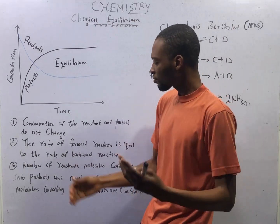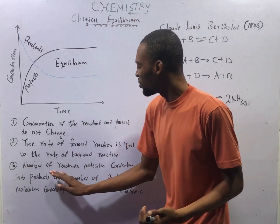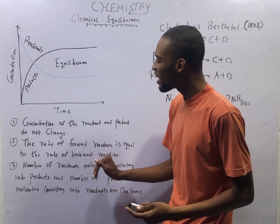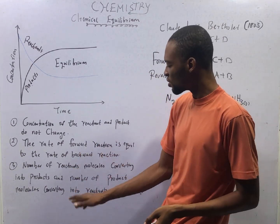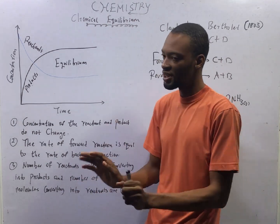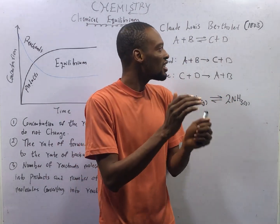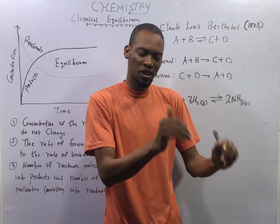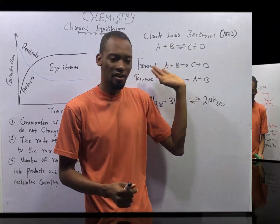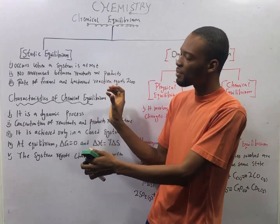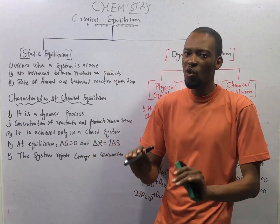Three: chemical equilibrium is when the number of reactant molecules converting into products and the number of product molecules converting into reactants are the same. The number of reactant molecules combining to give us products is the same as the number of product molecules combining to give us the reactants.